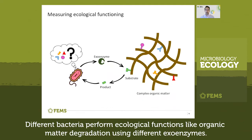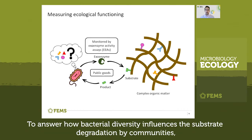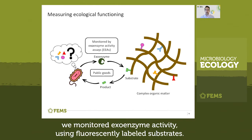Different bacteria perform ecological functions like organic matter degradation using different exoenzymes. This allows communities to share exoenzymes and substrate degradation products. To answer how bacterial diversity influences substrate degradation by communities, we monitor exoenzyme activity using fluorescently labeled substrates.